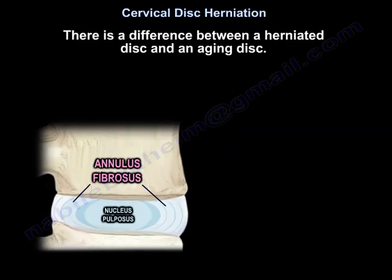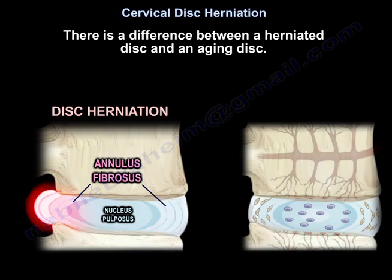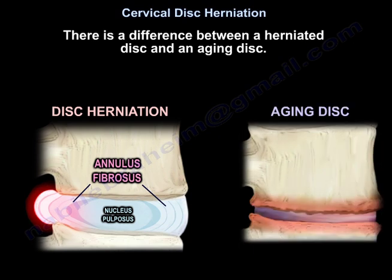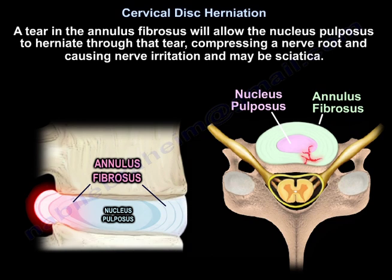There is a difference between a herniated disc and the aging disc. A tear in the annulus fibrosus will allow the nucleus pulposus to herniate through that tear, compressing a nerve root and causing nerve irritation and possibly sciatica.